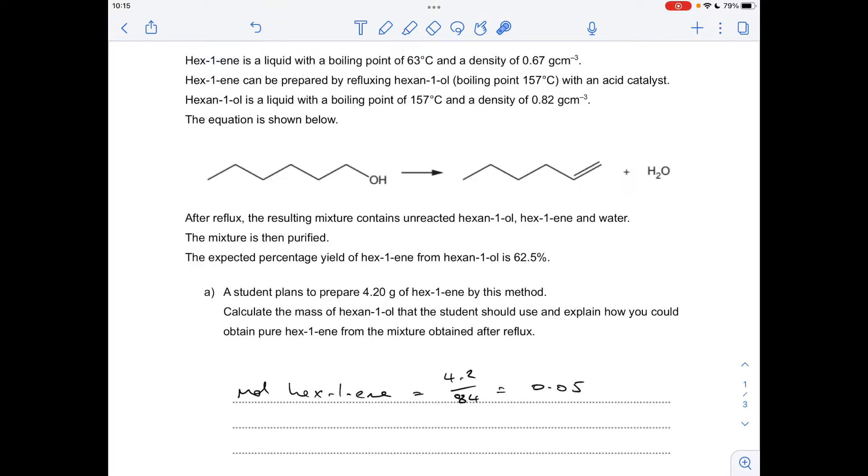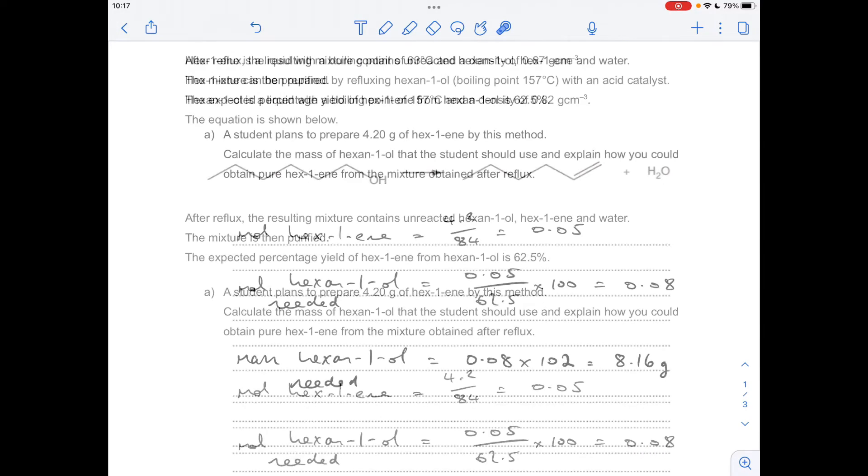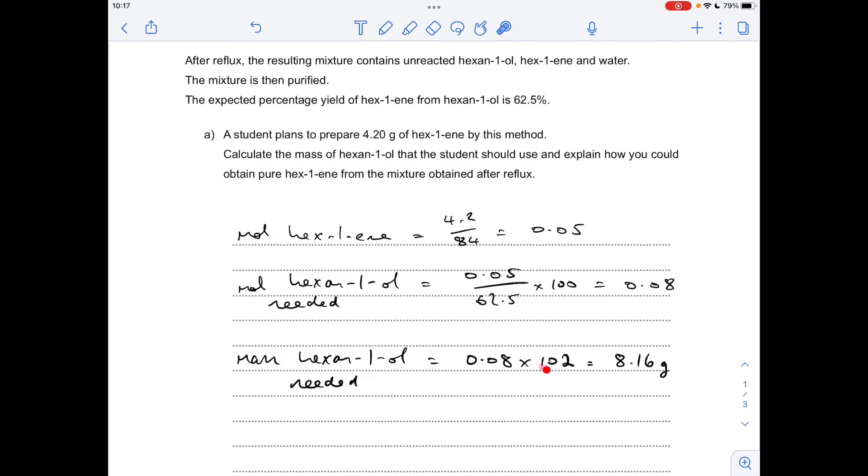So we know that we want to prepare 4.2 grams of hexane-1-ene, so we'll work out the moles, mass over MR, 0.05. And then to work out the moles of hexane-1-ol needed, remember it's not a 100% yield, so we're going to need more moles than that. We divide by the yield and multiply by 100, and that'll scale it up to what we're going to need, and that comes out to 0.08 moles. And then to convert to grams we just multiply by the MR and we get 8.16.